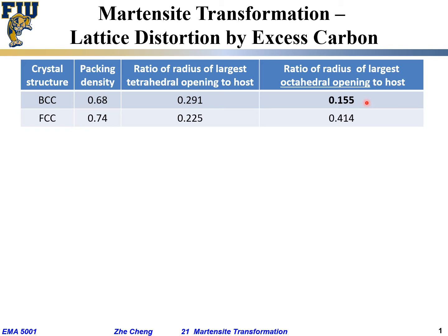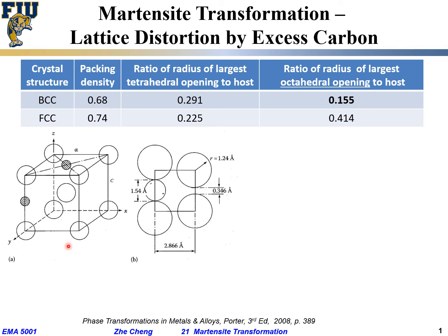Carbon wants to stay at the octahedral site. Looking at the BCC unit cell — body-centered, meaning eight corner atoms plus one in the center — if we look at the actual geometry and compare the size of the carbon atom versus the iron atom, the carbon really has to push the iron atoms up and down to accommodate itself at the octahedral site.